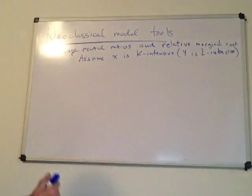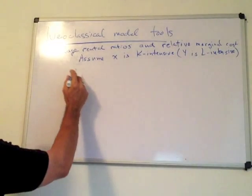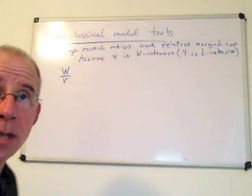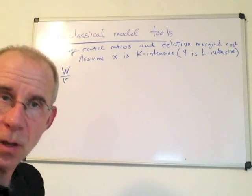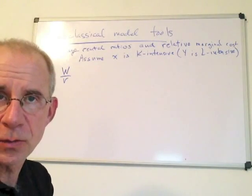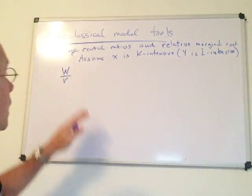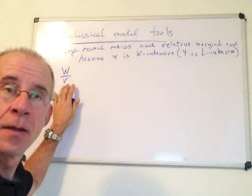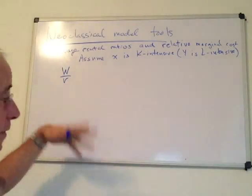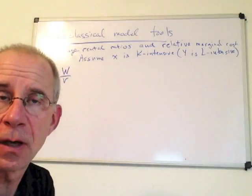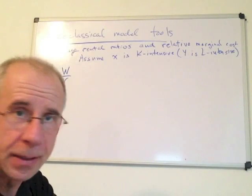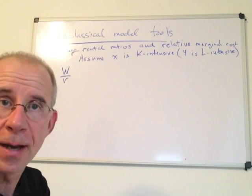So let's make sure that we understand what some of these terms mean. The wage-rental ratio is the cost of labor compared to the cost of capital, and we're going to be assuming that both X and Y industries pay the economy-wide wage and they pay the economy-wide cost of capital if they want to use capital. This is a kind of long-run model where labor and capital can move back and forth between sectors searching out higher returns.